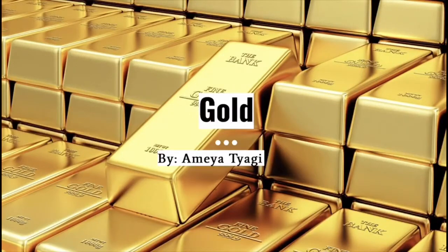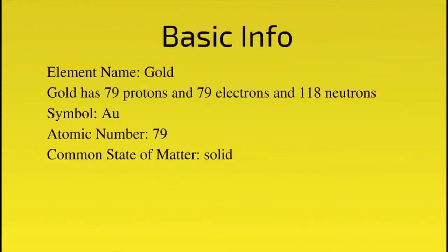Gold. Basic info. Element name: gold. Gold has 79 protons, 79 electrons, and 118 neutrons. Symbol: AU. Atomic number: 79. Common state of matter: solid.